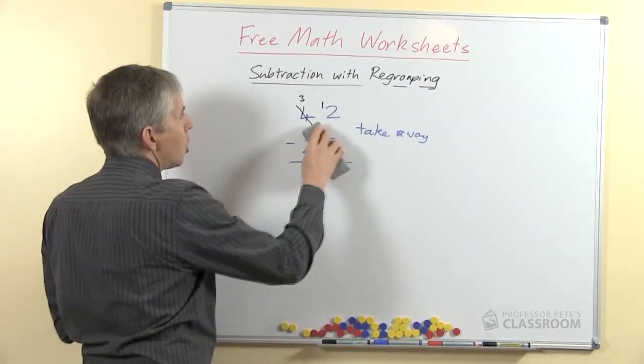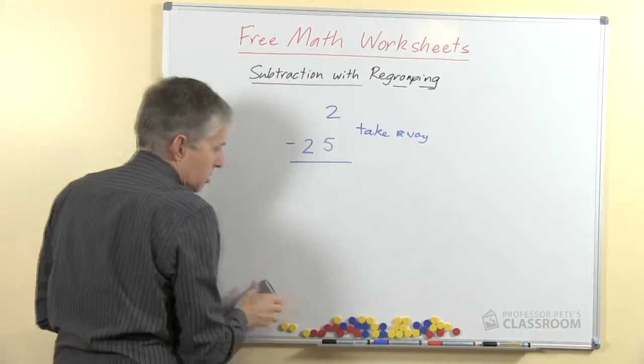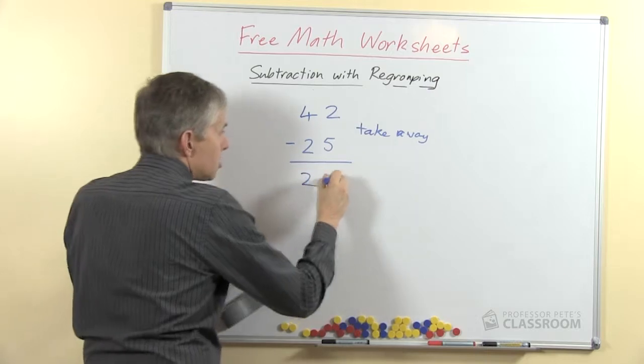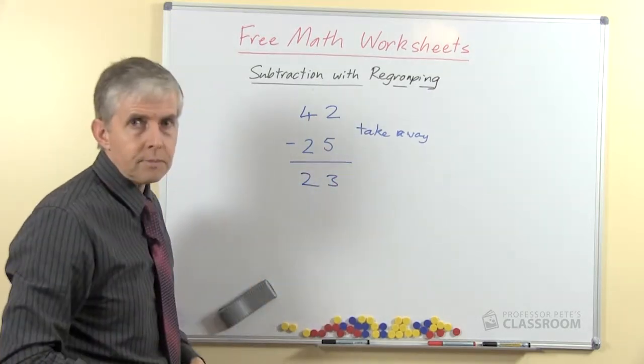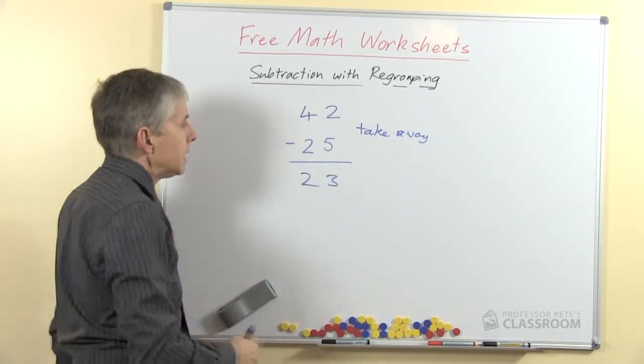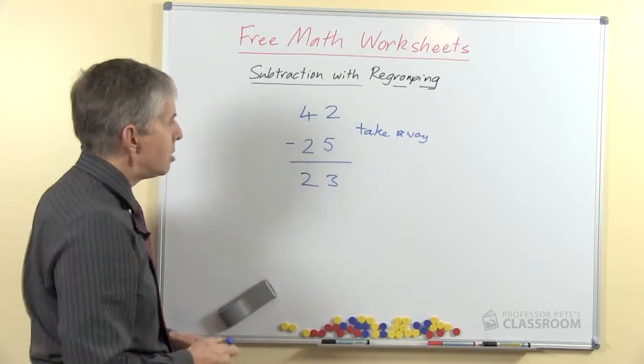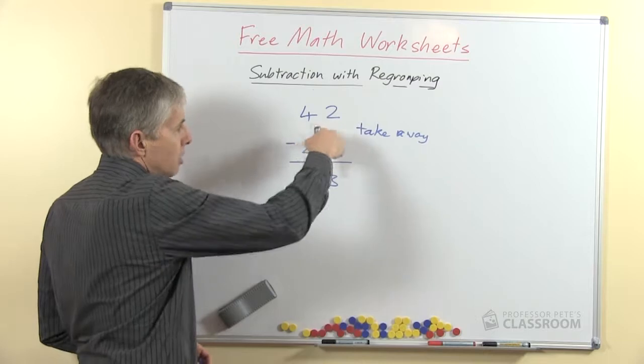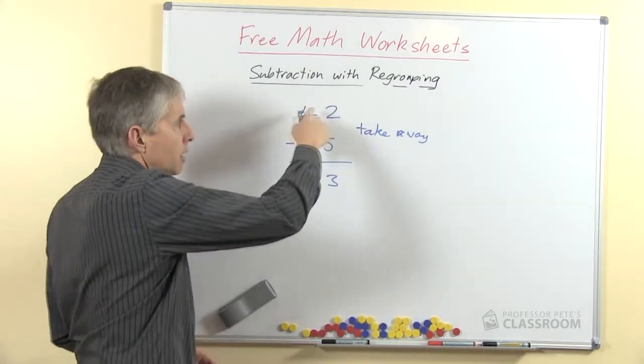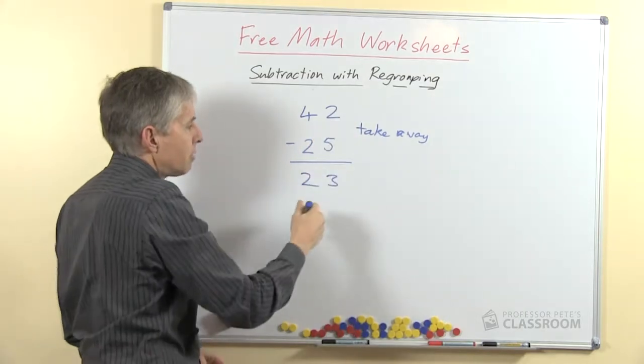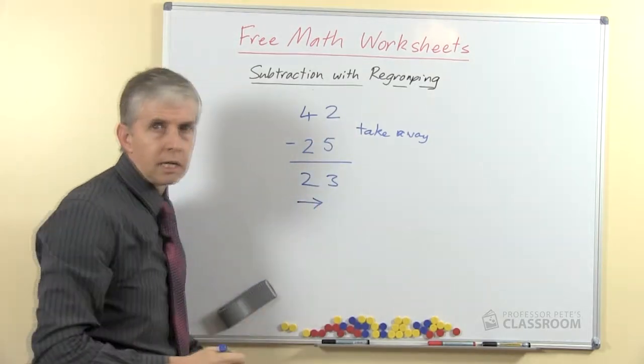The problem is, the most common mistake that children make and I'll just illustrate this here in doing subtraction questions like this, is to get that answer. And I'm assuming, because you don't get a chance to watch the child generally when they do it, that they are absolutely working at the difference between the pairs of numbers. So the difference between these two is 2, the difference there is 3, and it's quite possible they're working left to right.